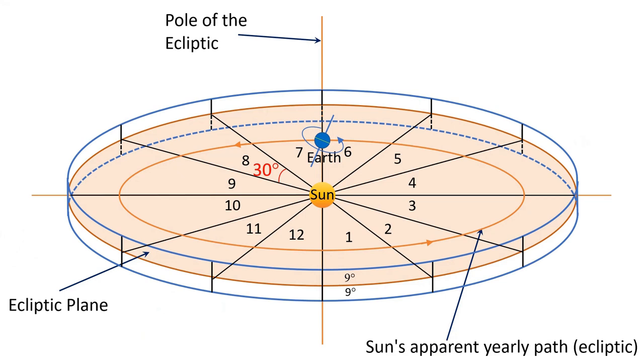In astrology and astronomy, each degree is divided into 60 minutes and each minute into 60 seconds.